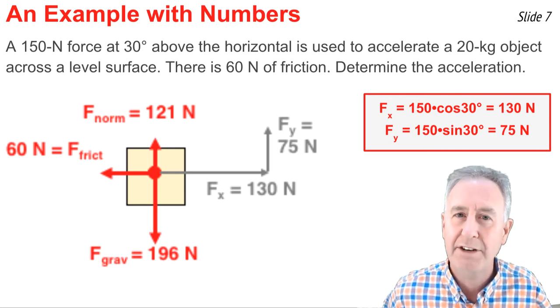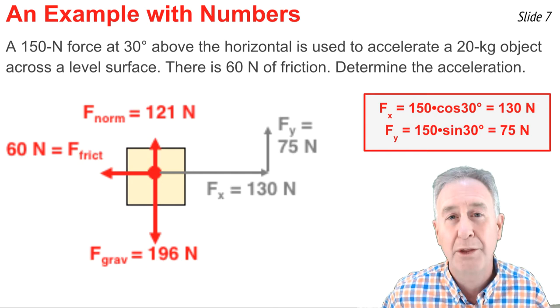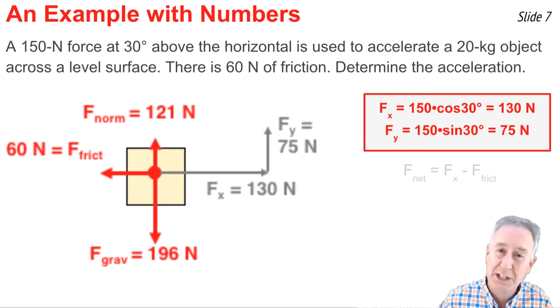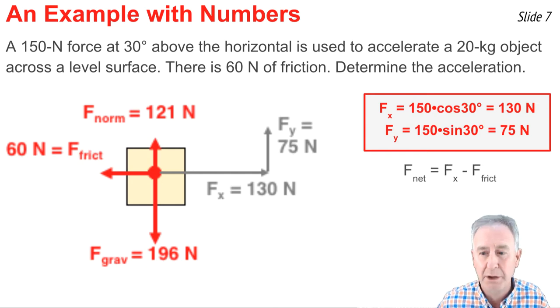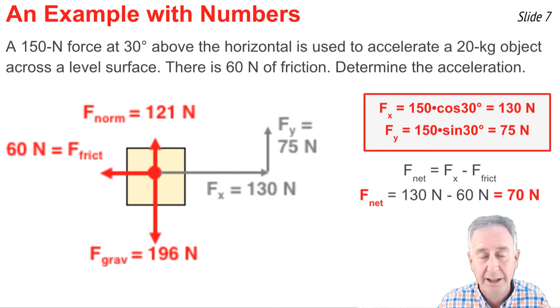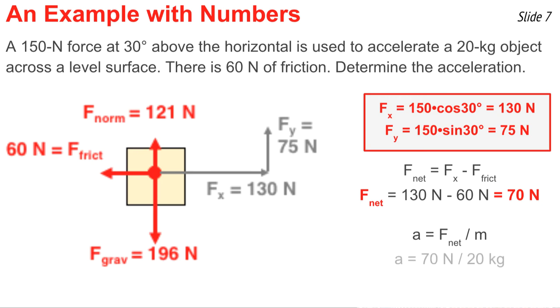When it comes to the F net, I need to sum the horizontal forces, the 130 to the right and the 60 to the left. And when I sum those, I end up getting 70 newtons to the right. That's the net force. To calculate the acceleration, I simply use Newton's second law: a equals F net over m. The F net is 70 newtons, just calculated it, and the mass is up in the problem, 20 kilograms. 70 divided by 20 kilograms gives me the value of this acceleration, and it comes out to be 3.5 meters per second squared.